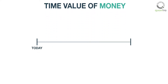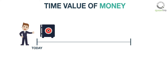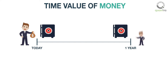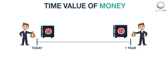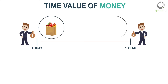Let us assume that today you have $1,000 cash with you. If you take it and lock it away in your cupboard and look at it after a year, that cash is just going to be the same, that is $1,000. However, after a year, the buying power of the cash would have reduced. To put it in a different way, the bundle of goods that you can buy with $1,000 today will not be the same after one year.